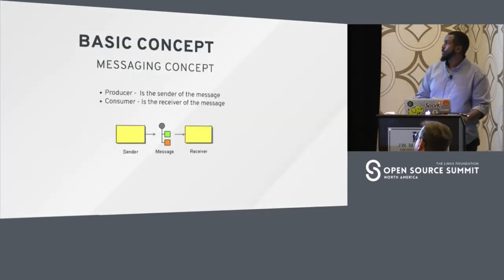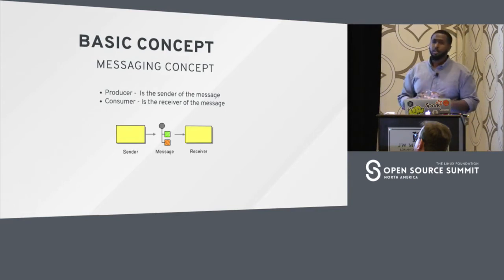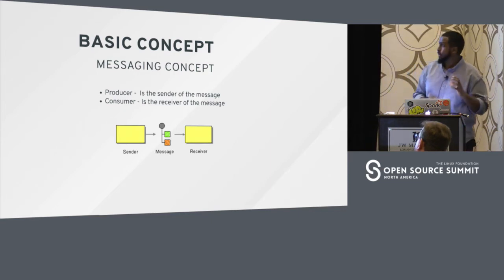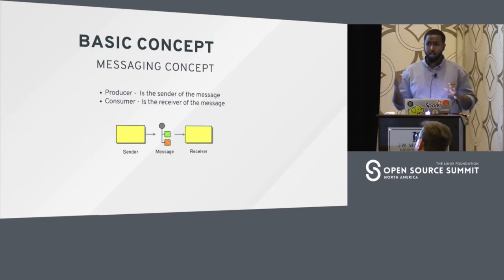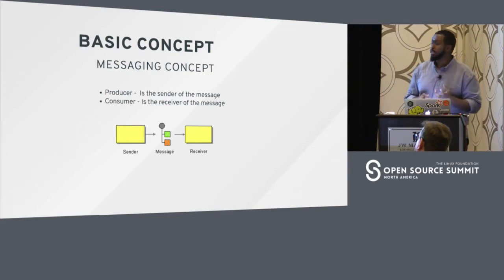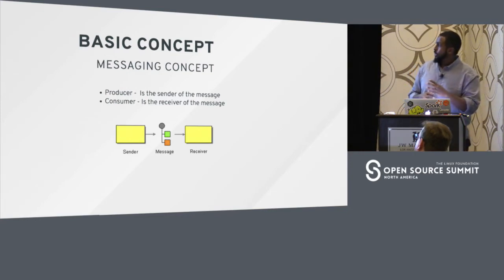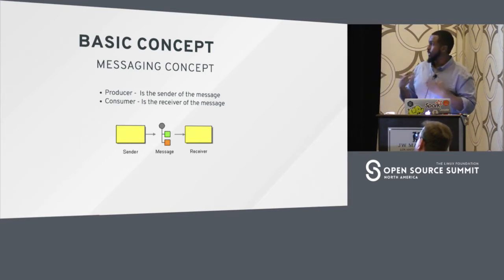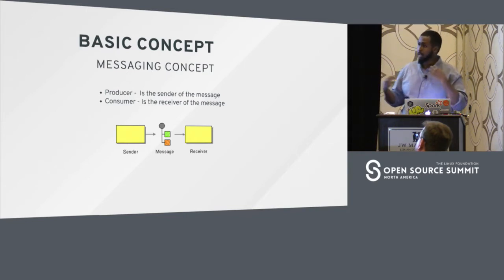Let's understand a very basic concept: you have a sender, a receiver, and a message. When you send a message, you're sending it somewhere and somebody else is receiving it. In the messaging world, we call this producer and consumer.